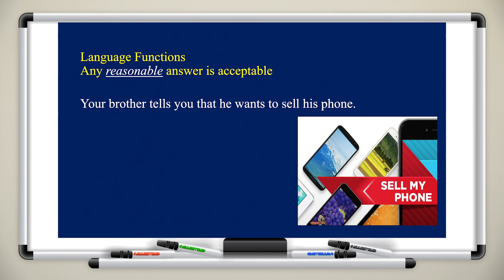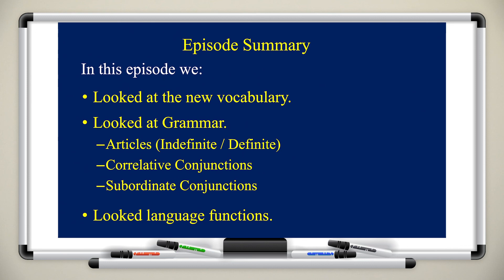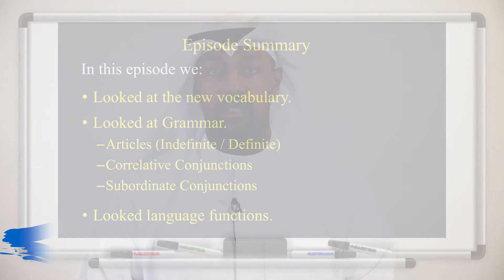Another example: your brother tells you he wants to sell his phone. You can agree or disagree. One possible answer: 'Selling your phone is not a good idea, as your old information can still be recovered.' Another: 'Why don't you try to fix your phone before you sell it? You can save money by fixing it.' In this episode we covered grammar — articles, correlative conjunctions, and subordinating conjunctions — as well as language function. Thank you for watching.